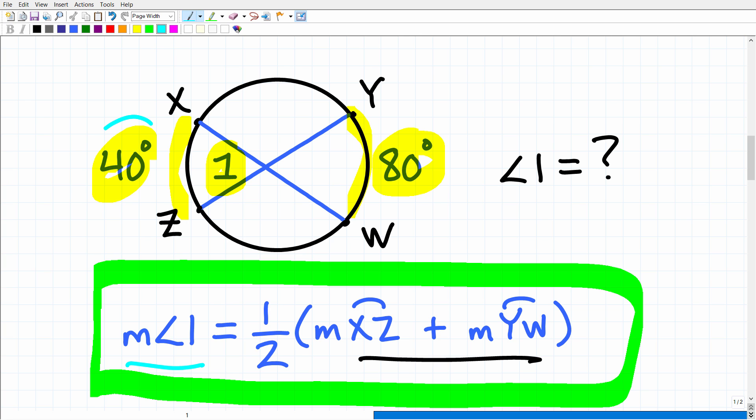So not too difficult. Basically, all we need to do is simply take this and add it to this, and then take 1 half of that, and we'll get the answer. Now, angle 1 happens to be the same as this angle because these are both vertical angles.